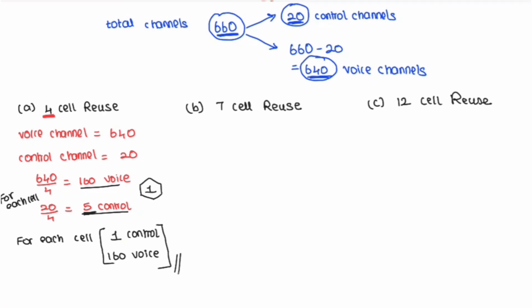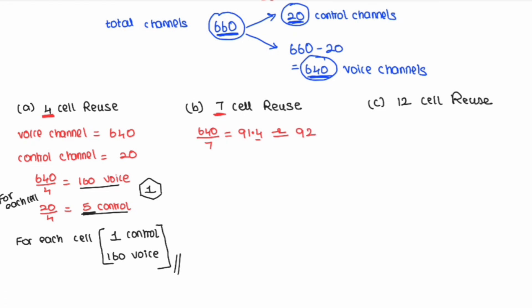For 7-cell reuse: voice channels = 640 ÷ 7 = 91.4, approximately equal to 92 voice channels per cell. Control channels = 20 ÷ 7 = 2.8, approximately equal to 3 control channels per cell.